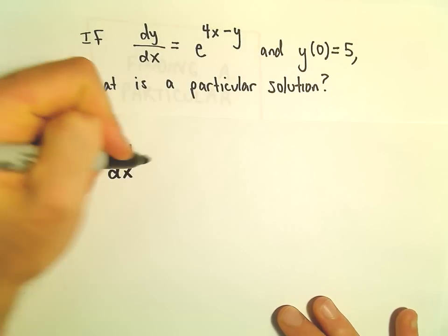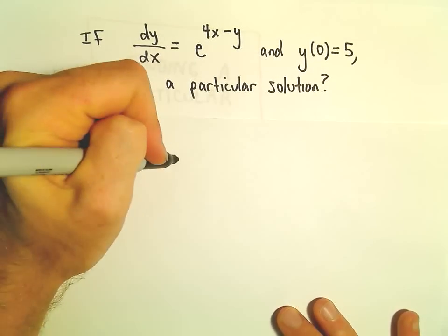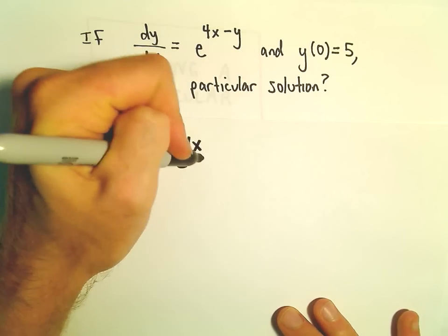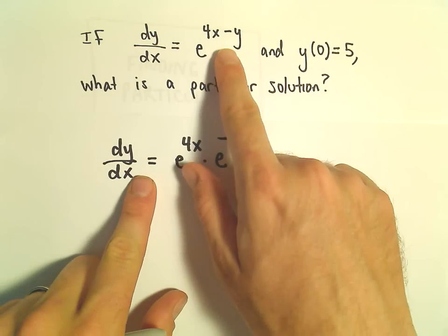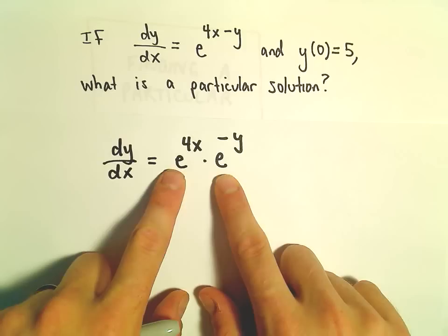The first thing I'm going to do is break this equation up. I'm going to make this e^(4x) times e^(-y). We can break up e^(4x-y) just like that.